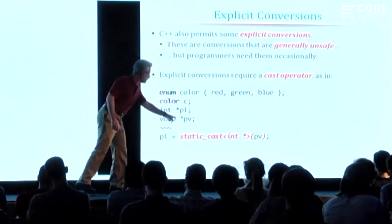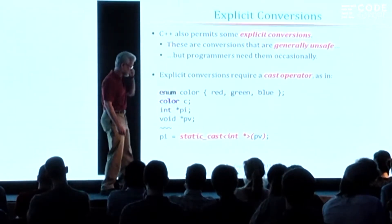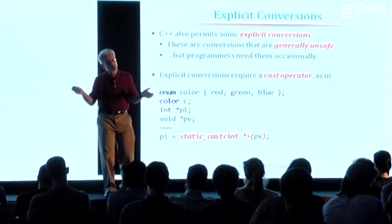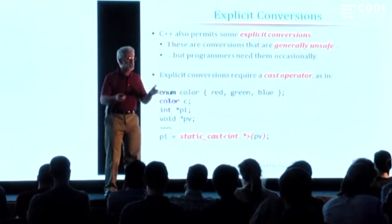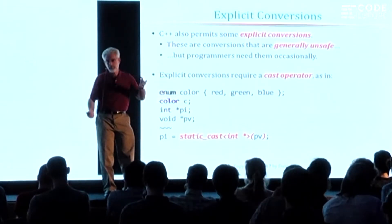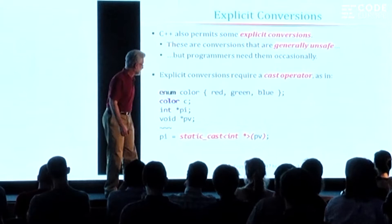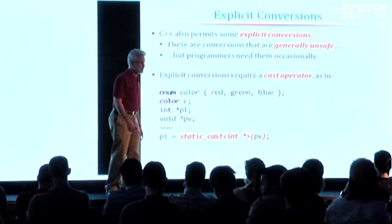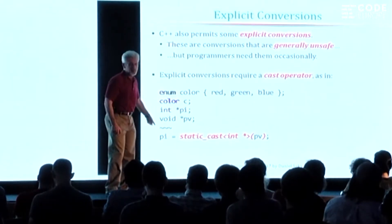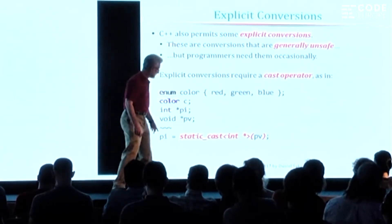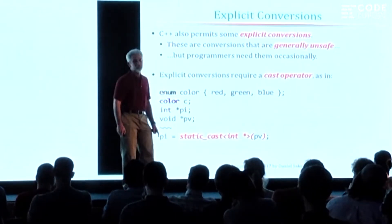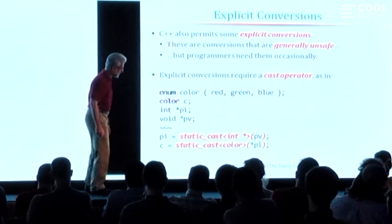Why is converting a pointer to void into a pointer to integer generally unsafe? Because a pointer to void could be pointing to anything — a float or a string or a widget. And then when you take a pointer to void and convert it to a pointer to int, you're saying 'I'm certain there's an int in there.' And the compiler says, are you really sure? If you're really sure, then say it. That's what the cast is.